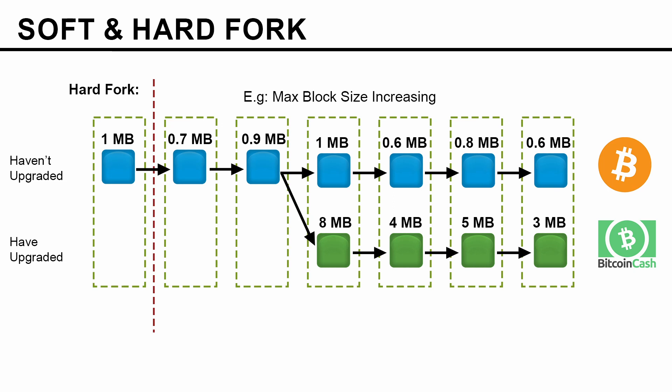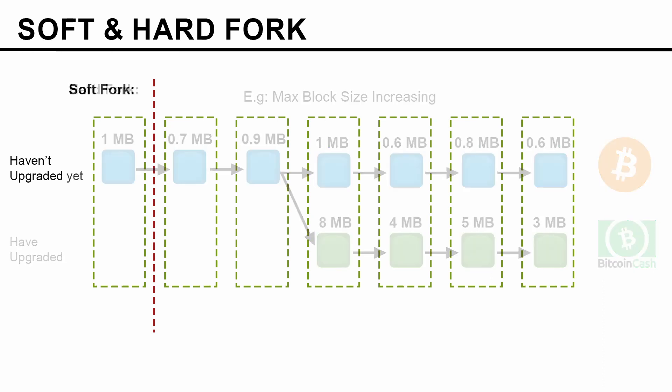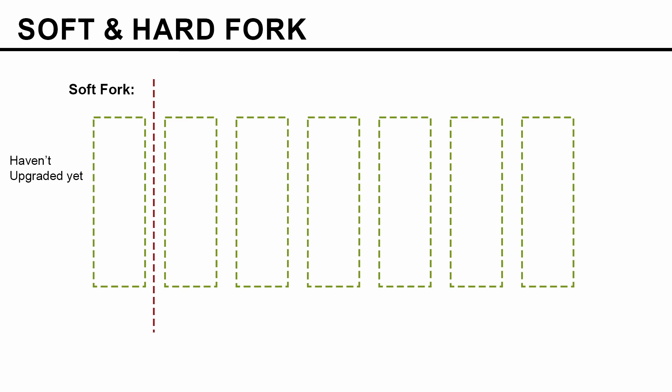This is how hard fork works. It is called a hard fork because it is not backward compatible. Once the split occurs, each chain goes on its own way and it cannot be reversed.